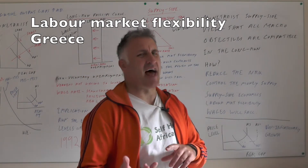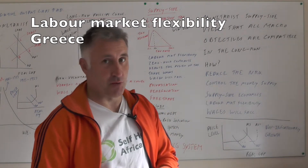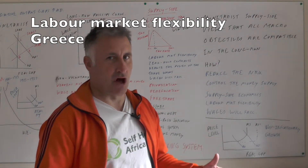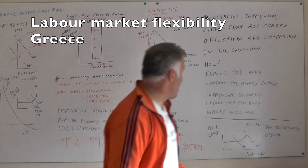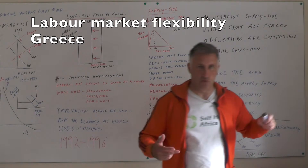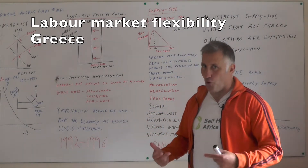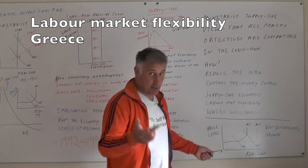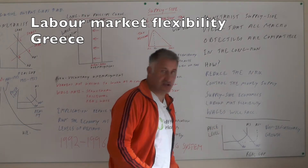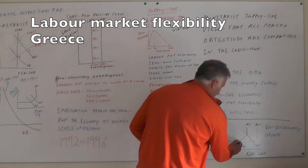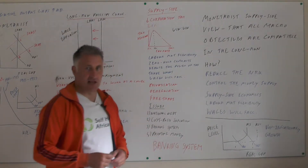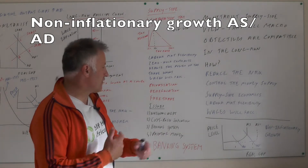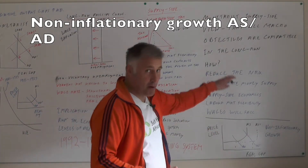There's an element of truth in that — it certainly would have helped the situation — but there are lots of institutional reasons why Greece had such problems. This is the monetarist view, but all objectives are compatible in the long run. Using a Keynesian model, if you increase AS and AD at the same rate you achieve non-inflationary growth, and if supply-side kicks in with more exports you can have balance of payments equilibrium too.